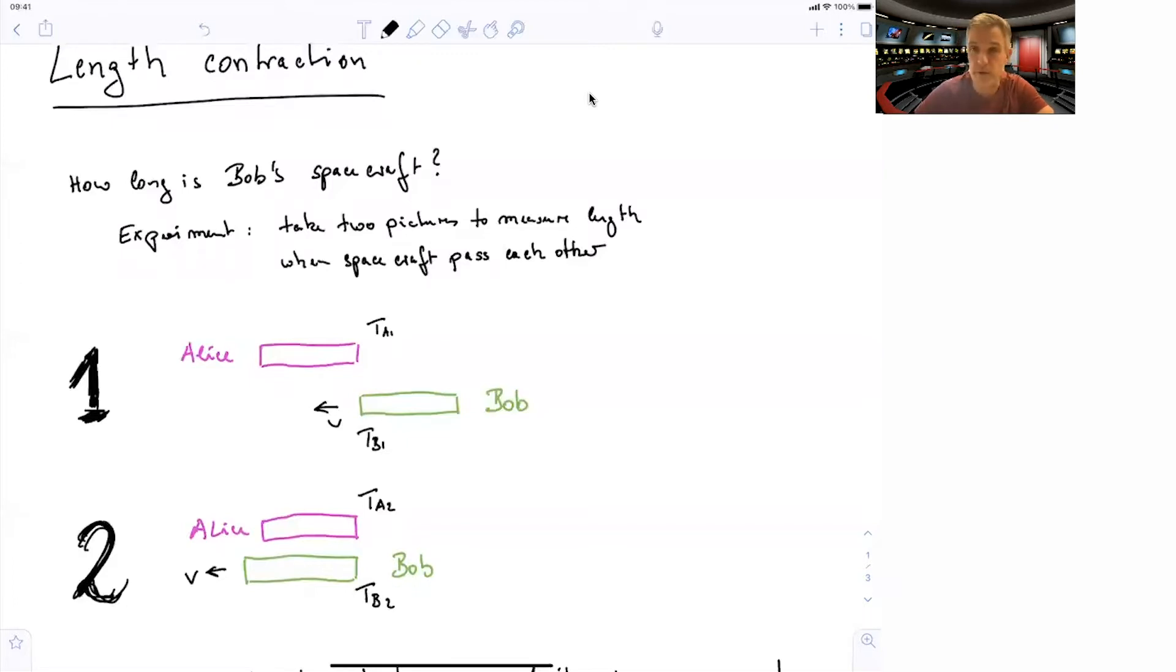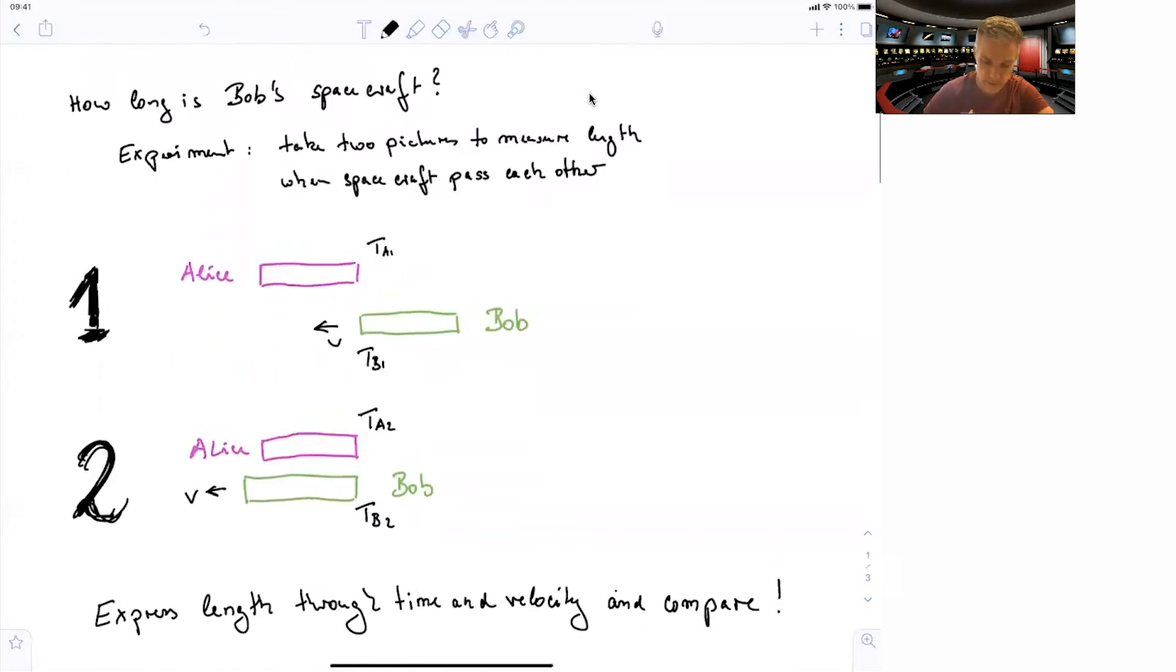So in the first picture, we see Alice's clock show TA1 and Bob's TB1. And for the second equivalently, we see TA2 and TB2. So your task is now to express the length of Bob's spacecraft, as Alice sees this from these pictures, and as Bob does see it from his own pictures, by comparing the time and the velocity.